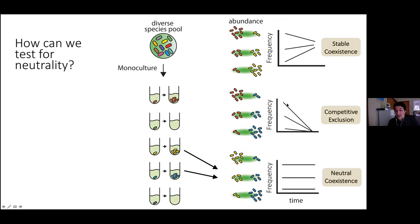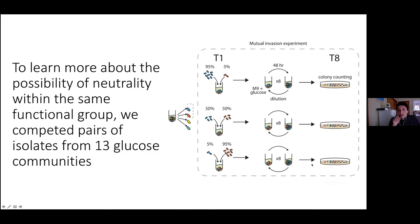Under neutral coexistence, if you mix yellow and blue strains at different starting frequencies — yellow high, equal, or yellow low — the two would drift apart over time but on average converge to roughly the frequency they started with. That was the hypothesis Chang set out to test.